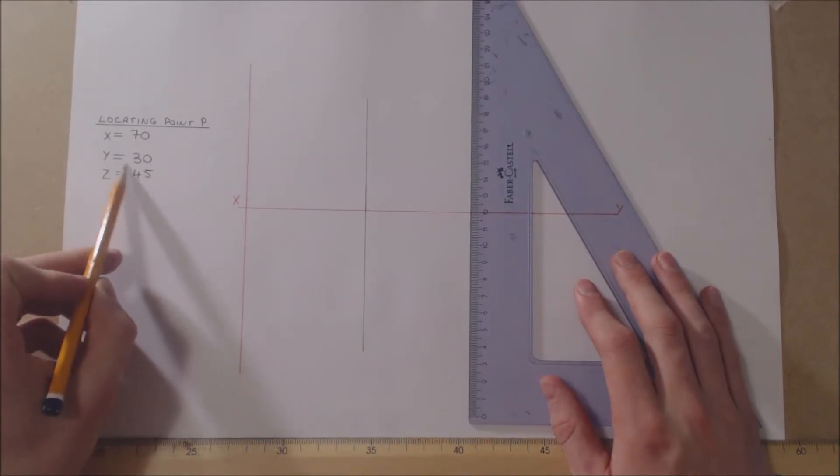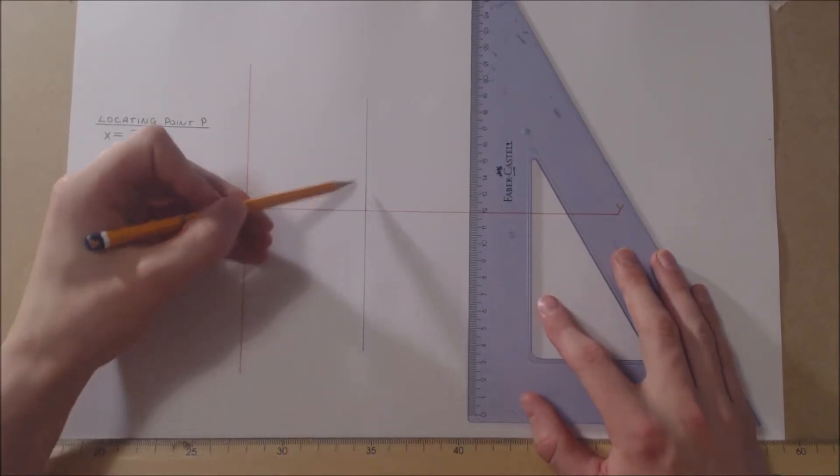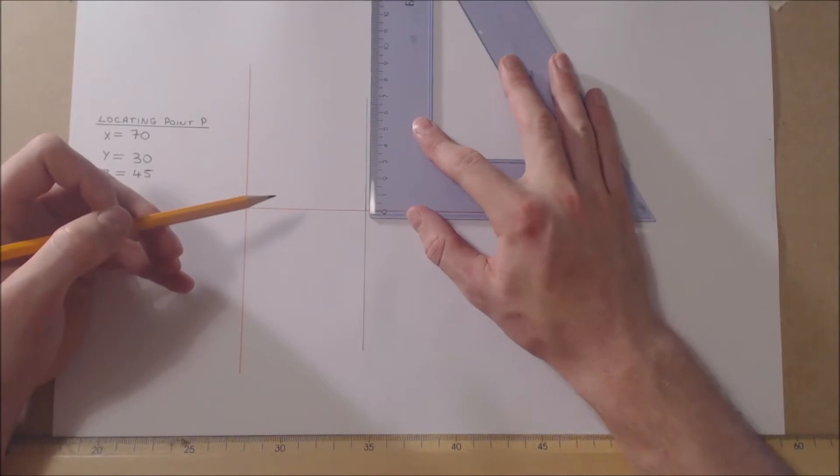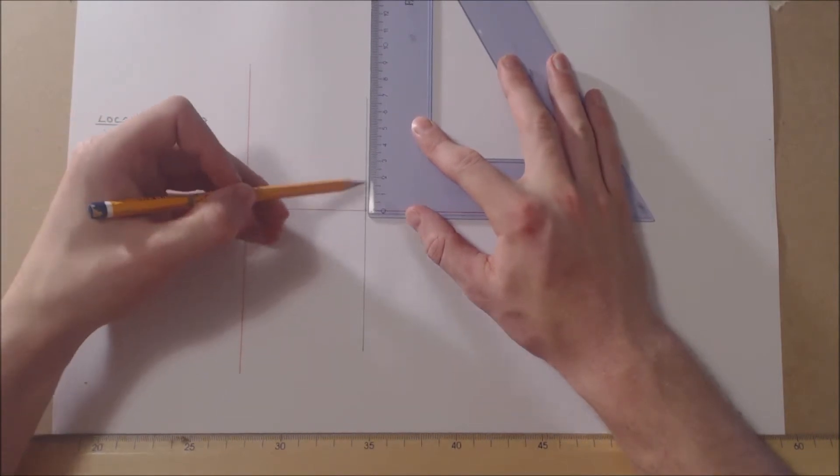Y equals 30 mil, so we measure 30 mil from the horizontal plane, i.e., the X, Y line in elevation.